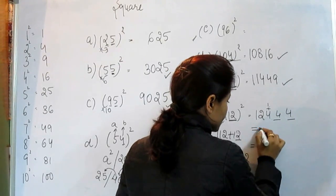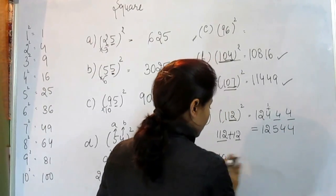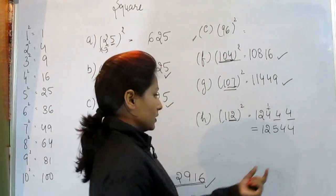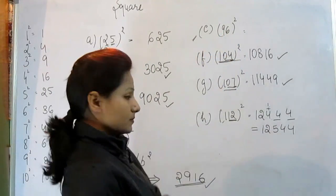So what is the answer? 1, 2, 5, 4, 4. So this is the answer. Now, come to this E.